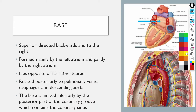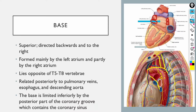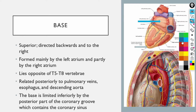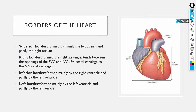We also have the esophagus related posteriorly to the base, as well as the descending aorta — the aorta arches over and then descends. The base is limited inferiorly by the coronary groove, which contains a large vein called the coronary sinus.